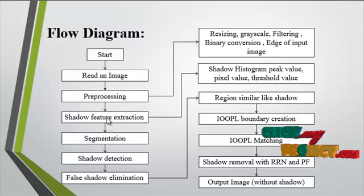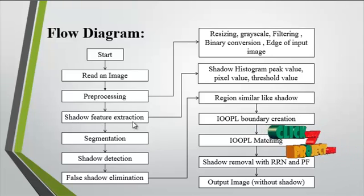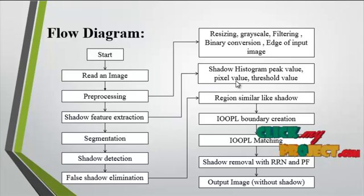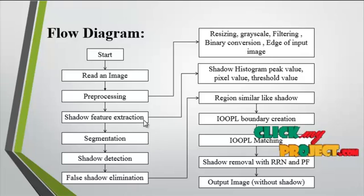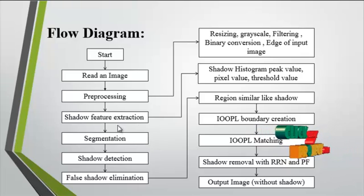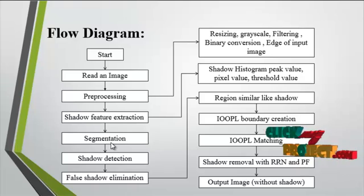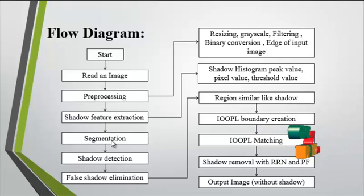After preprocessing, shadow feature extraction is carried out. The shadow histogram peak value level and threshold value are gathered from the preprocessed image. Then segmentation is performed — the shadow region is segmented and other backgrounds are eliminated.